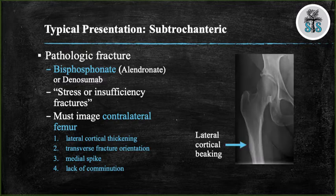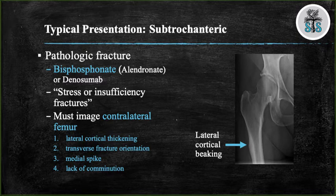Here is an example of lateral cortical beaking from a patient on prolonged bisphosphonate medications. Bisphosphonates inhibit bone resorption by suppressing osteoclasts and decreasing bone turnover. There are two different types: non-nitrogen containing and nitrogen containing. Nitrogen containing bisphosphonates inhibit osteoclasts via the farnesyl pyrophosphate synthase enzyme. Non-nitrogen containing bisphosphonates cause premature death and apoptosis to the osteoclasts by forming a toxic ATP analog. When you have someone with a pathologic fracture due to bisphosphonates, you want to prescribe calcium and vitamin D, discontinue their bisphosphonates or other anti-resorptive agents, and prophylactically treat an incomplete fracture with a cephalomedullary nail unless the patient is pain-free.